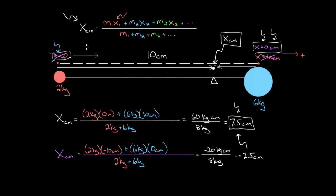So to recap: you can use the center of mass formula to find the exact location of the center of mass between a system of objects. Add all the masses times their positions and divide by the total mass. The position can be measured relative to any point you call x equals zero, and the number you get will be the distance from x equals zero to the center of mass of that system.